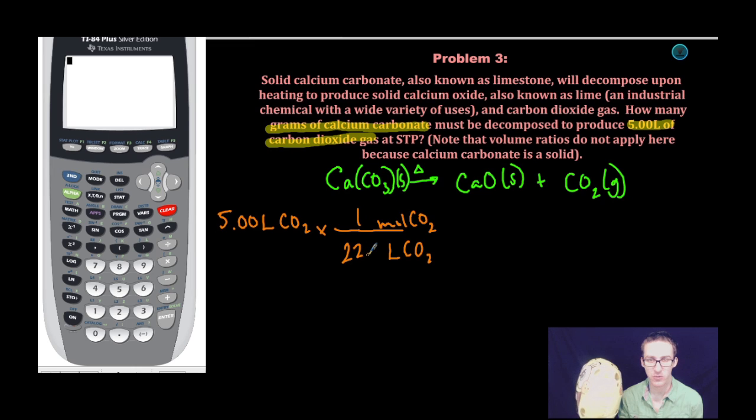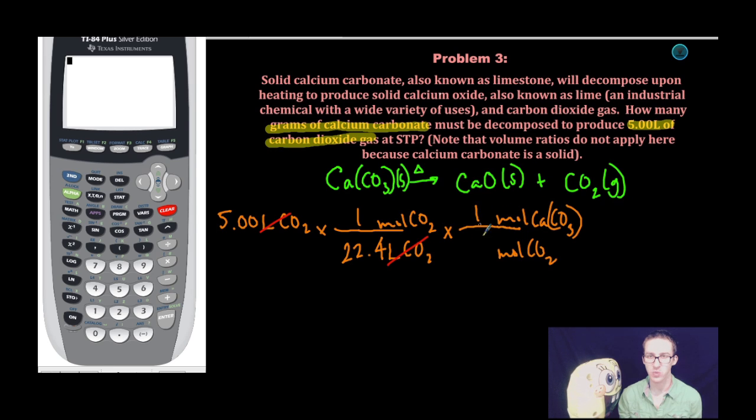one mole is 22.4 liters. If I stopped right here, I would solve for moles of CO2, but I need to keep going because I'm looking for grams of calcium carbonate. I'll put moles of CO2 on the bottom here and go to moles of calcium carbonate. The relationship is one to one. An important step so that my units of moles CO2 cancel out. And then my final conversion factor is going to get me from moles of calcium carbonate to grams of calcium carbonate.